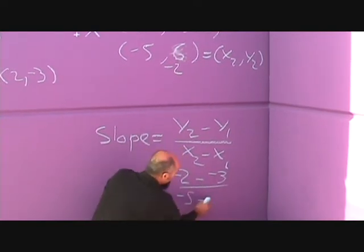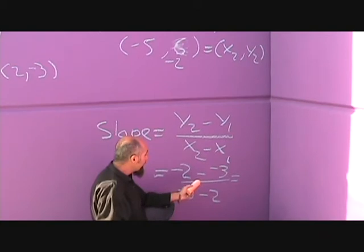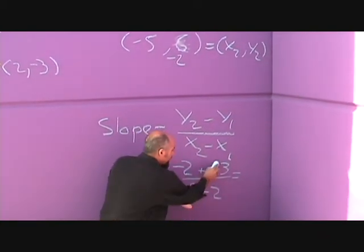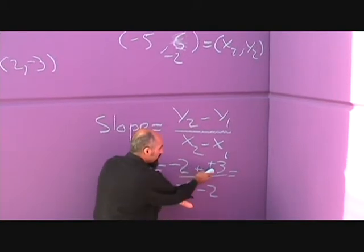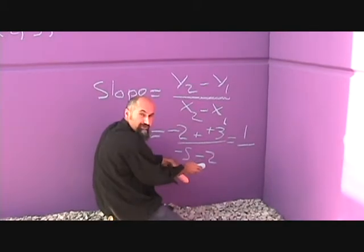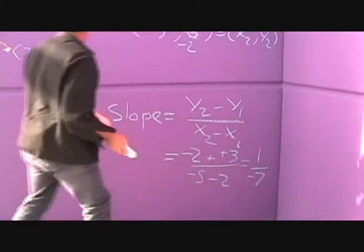If you remember your negative numbers, a negative and a negative becomes positive, so this becomes negative 2 plus 3 is 1, negative 5 minus 2 is negative 7, so the slope is...